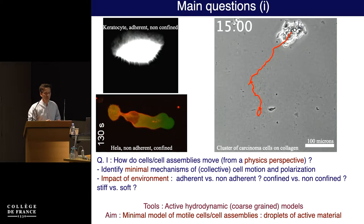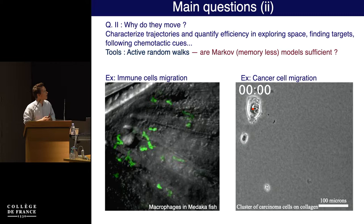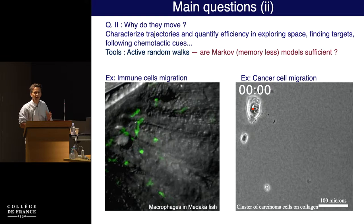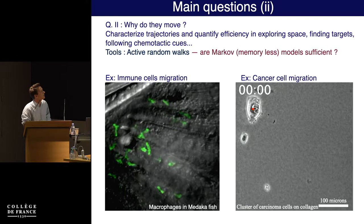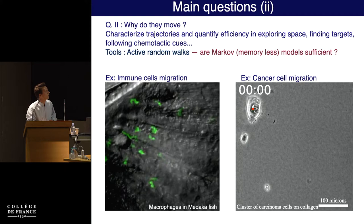The second question I'm typically interested in: as long as you have some understanding of how cells move, you can take a larger picture, look at the trajectories obtained, and discuss how efficient these cells are in moving. That would be more of a 'why' question. Are they efficient in fulfilling their function, which is moving? This type of question arises in two contexts. You can look at immune cells, for example macrophages in a transparent fish, whose function is essentially to explore space and find intruders. The typical tools physicists have to describe this motion are random walks, here belonging to a class of active random walks because of cell propulsion.